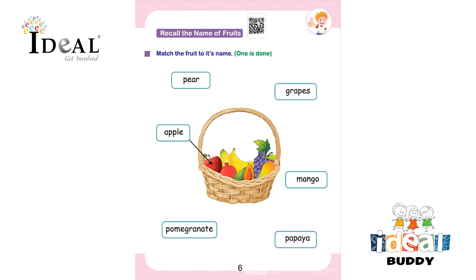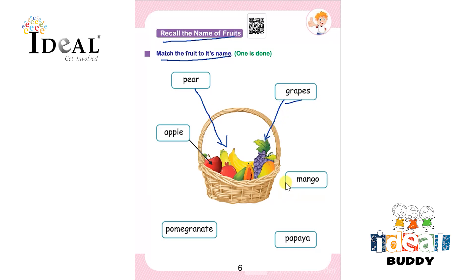So the child has to recall the names of fruits and match the fruit to its name — one is already done for them. Apple is matched to its picture. Next is pear, then grapes, then mango, then papaya, and the last one is pomegranate. Match each fruit to its correct name and complete the worksheet. Thank you.